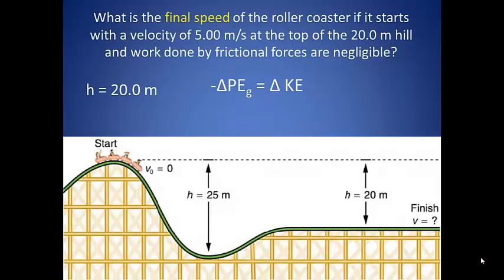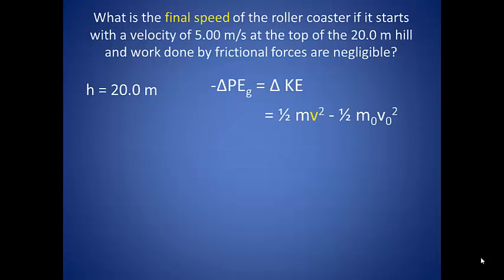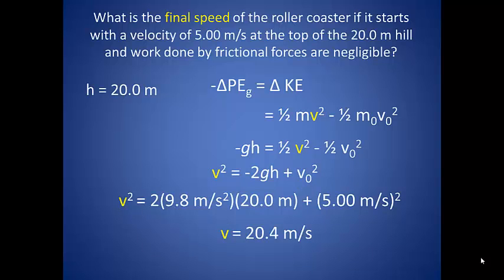Now how does the final velocity change if the coaster starts with a velocity of 5 meters per second? We still have gravitational potential energy equal to our change in kinetic energy. In this case, however, we have to take into account that there is an initial kinetic energy. Let's go ahead and get rid of our masses and solve for our final velocity. While this velocity is higher than the final velocity with no kinetic energy, it is really not by very much.